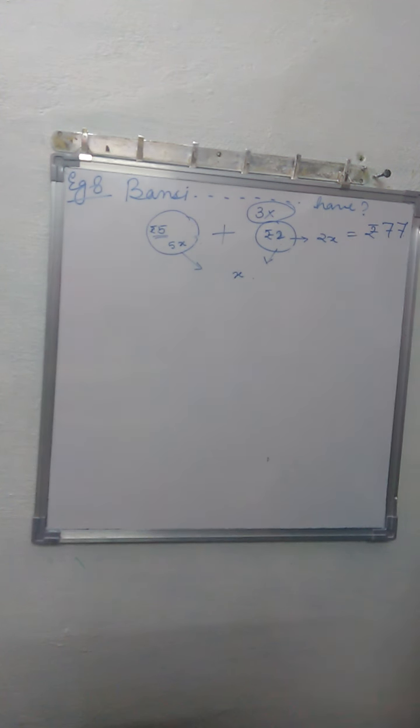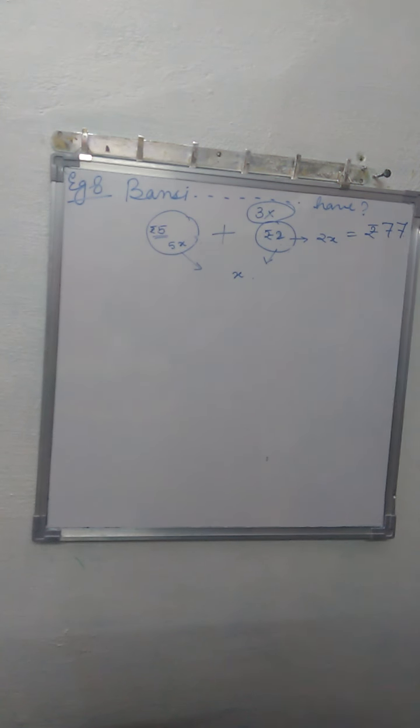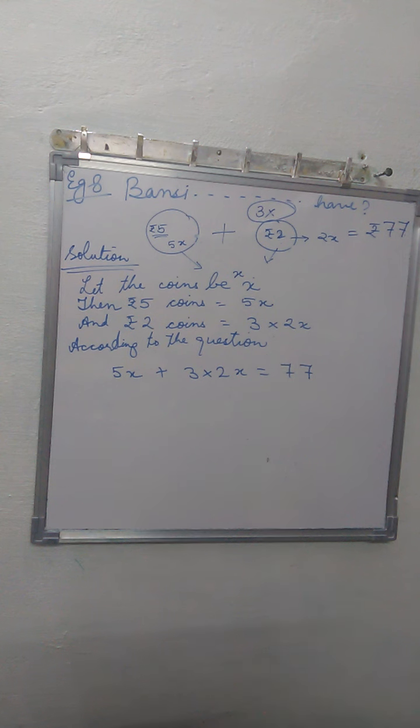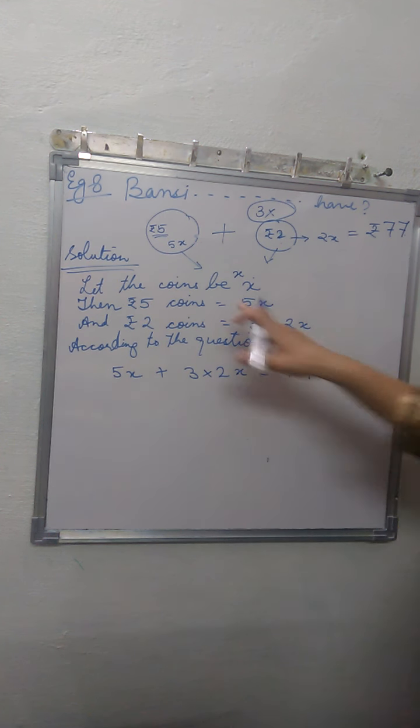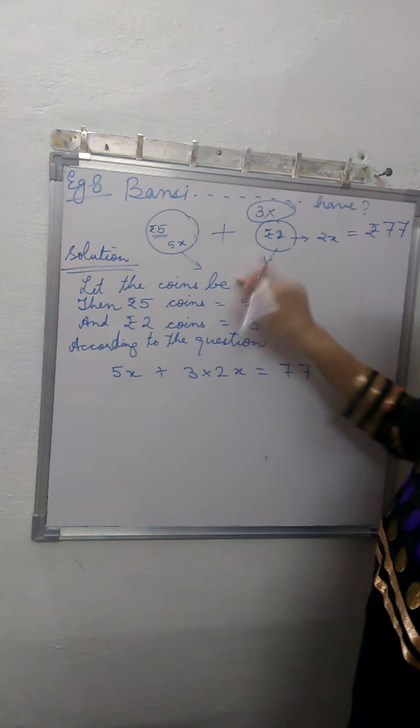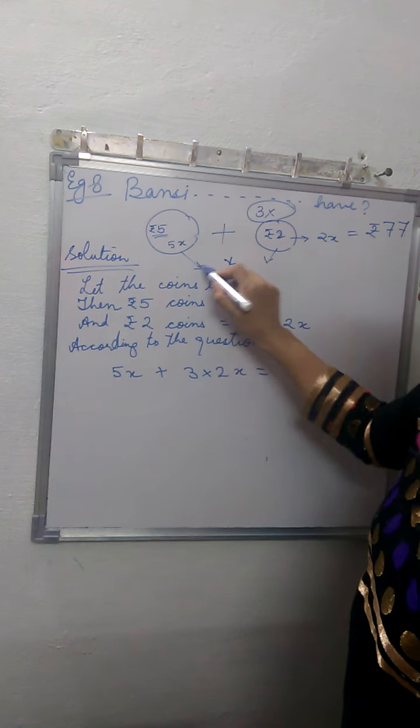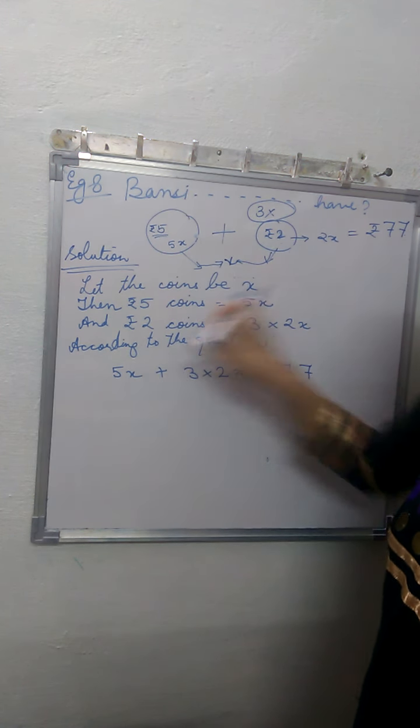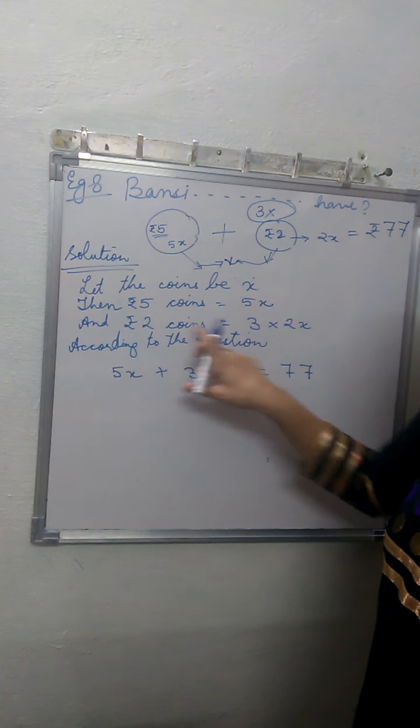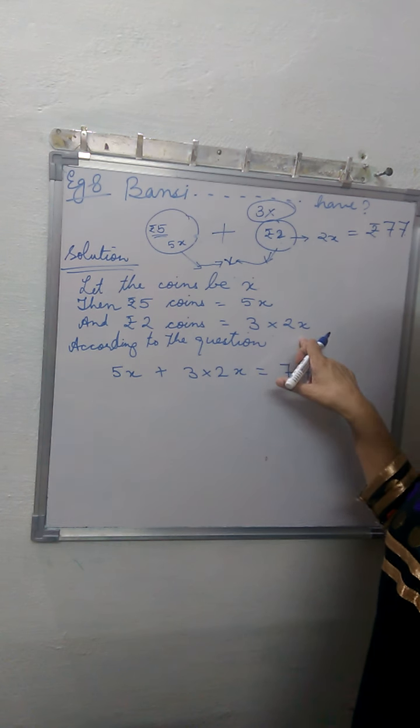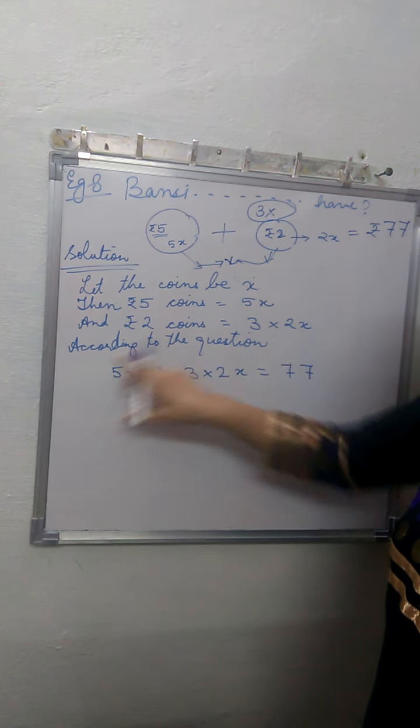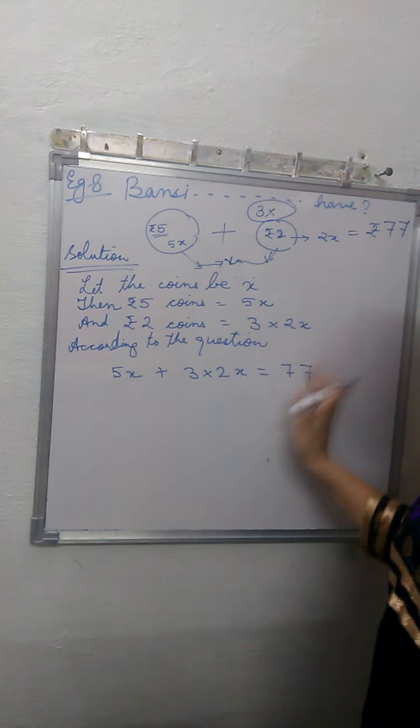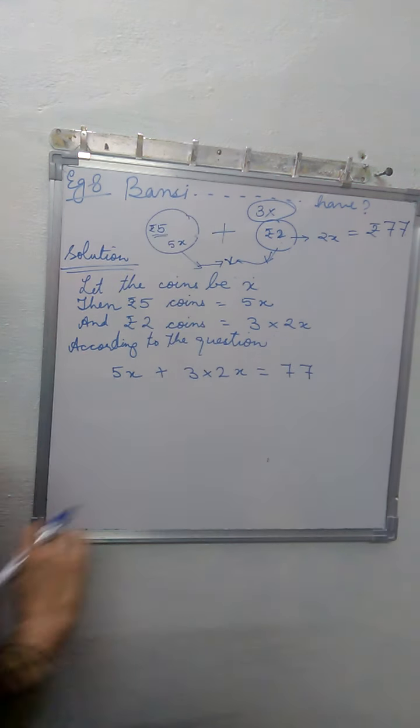So let's write what is given. Here, I have written all the givens. Let the coins be X. Then 5 rupee coins is 5X, and 2 rupee coins is 3 times 2X. According to the question, the sum of this will give us rupees 77. Now we will solve.